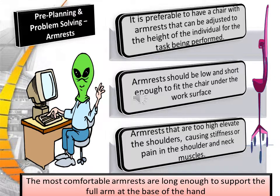It is preferable to have a chair with armrests that can be adjusted to the height of the individual for the task being performed. Armrests should be low and short enough to fit the chair under the work surface. Armrests that are too high elevate the shoulders, causing stiffness and pain in the shoulder and neck muscles. The most comfortable armrests are long enough to support the full arm at the base of the hand.